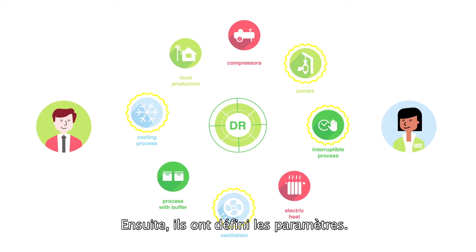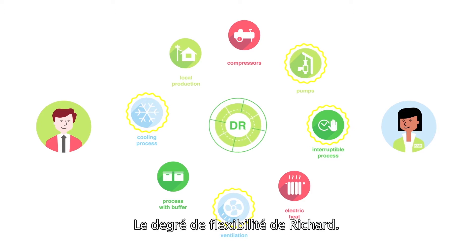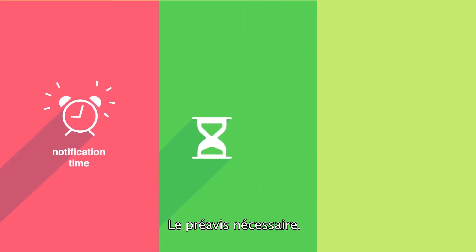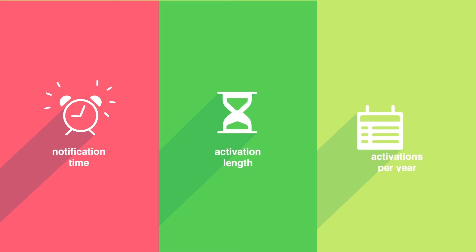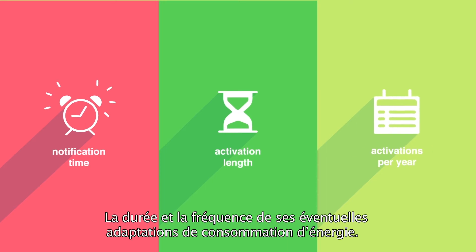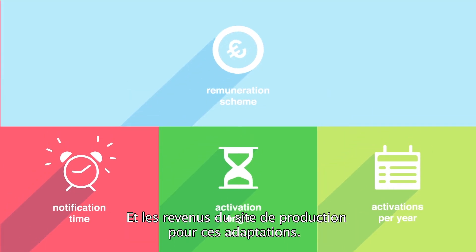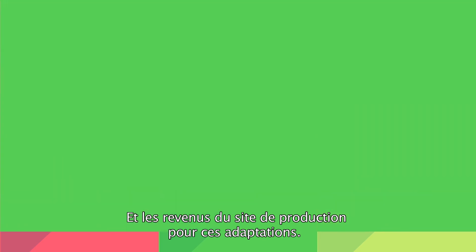From there, they set the parameters: how much flexibility Richard could provide, how much advance notice he required, how long and how often he could adjust his energy consumption, and how much his company would be paid for making adjustments.